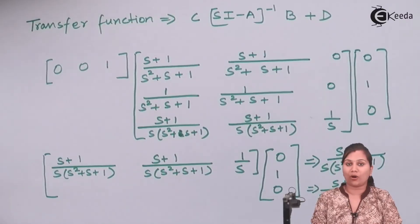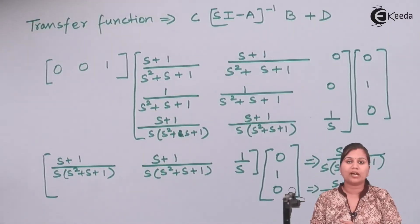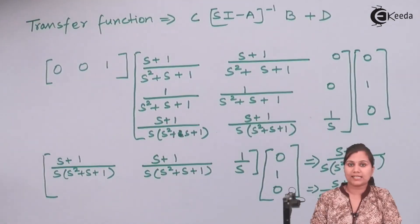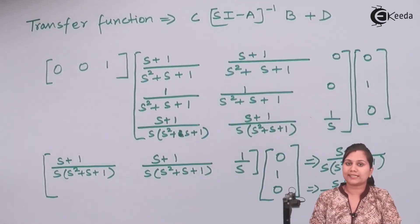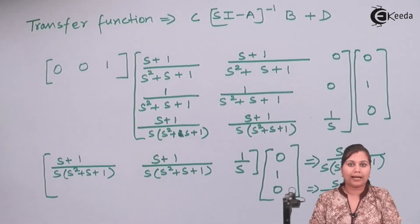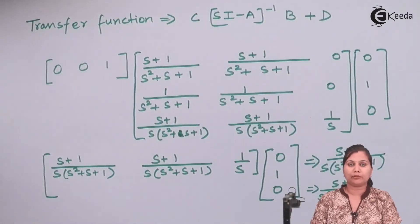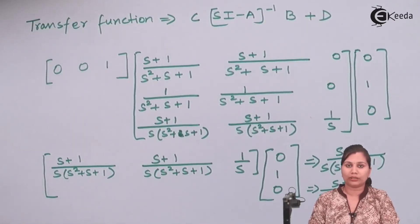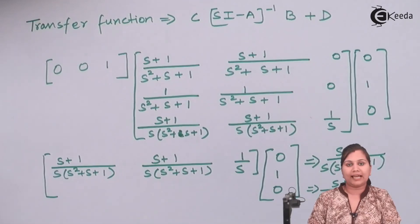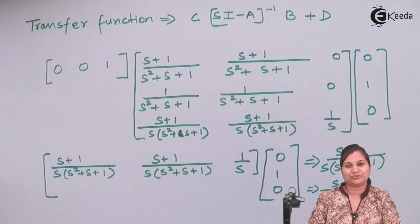I hope that this problem is clear to you — how we can derive the transfer function of a system when its state-space model is given to us. Just use the formula, calculate (SI-A) inverse, and then put the values of all the matrices; you can easily calculate the transfer function. Thank you.